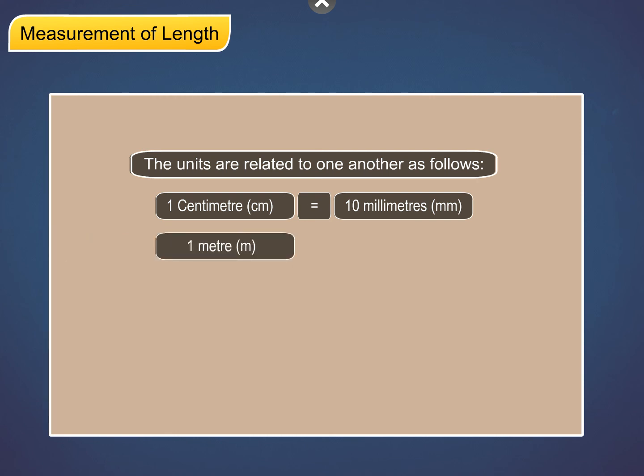One metre (m) is equal to 100 centimetres (cm).